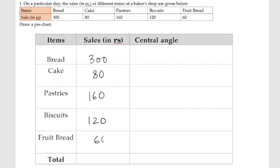Next is cake, 80 rupees. Next is pastries, 160. Next is biscuits, 120. Fruit bread is 60. Now let us add this. Zero plus zero plus zero plus zero is zero. Eight plus six is fourteen, fourteen plus two is sixteen, sixteen plus six is twenty-two.